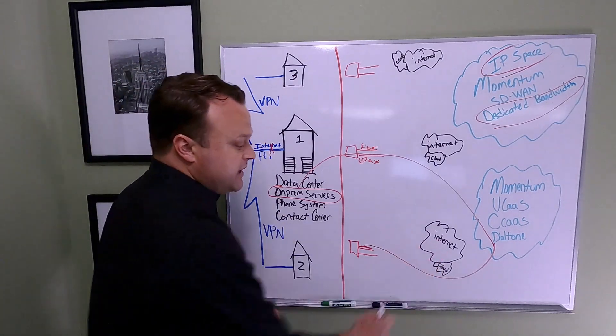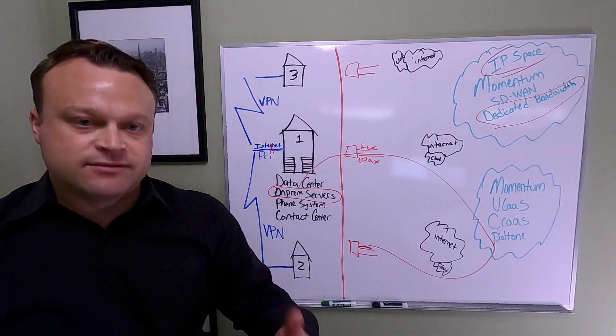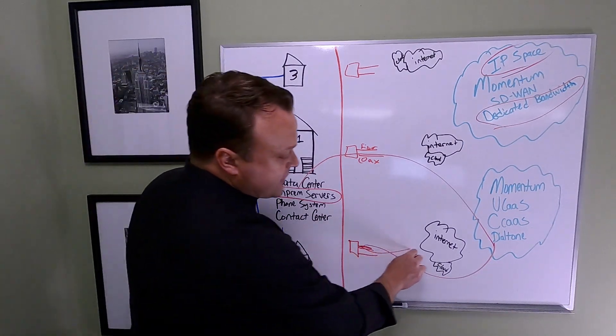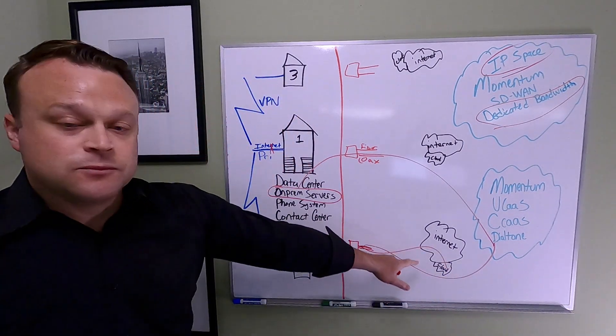The solution they needed was an aging phone system and some diversity. What we came in and said was let's put an SD-WAN box at each location, then let's bring in a primary fiber and a secondary coax to each location.